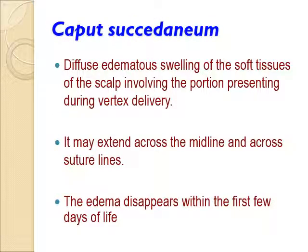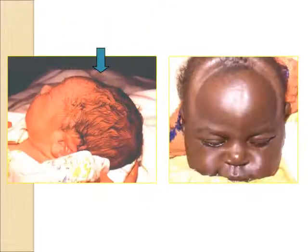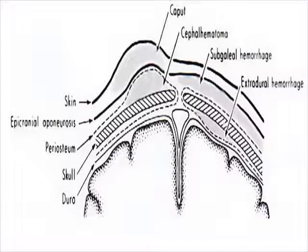What is caput succedaneum? It is a collection of edema or fluid under the scalp, under the soft tissue. This could have a benign course. It could be related to instrumental delivery, or it could occur spontaneously in normal labor without any intervention. It is a collection of fluid under the scalp — this is caput succedaneum.